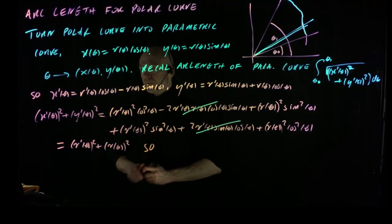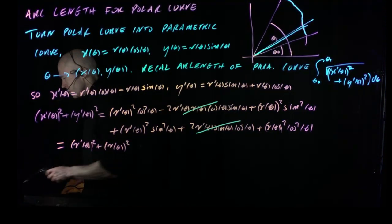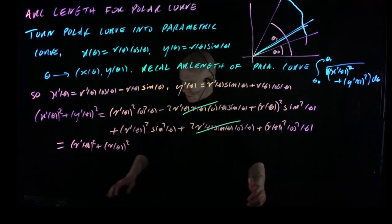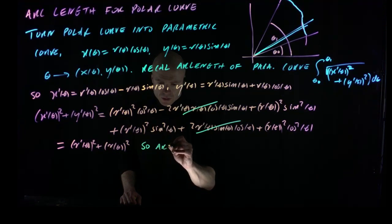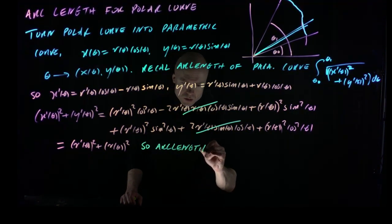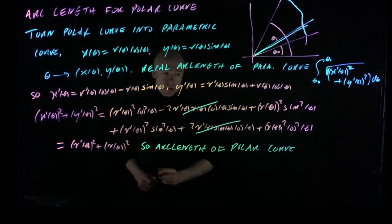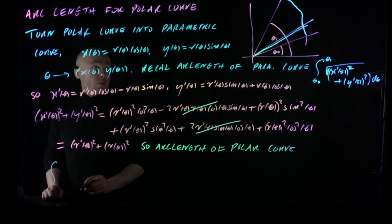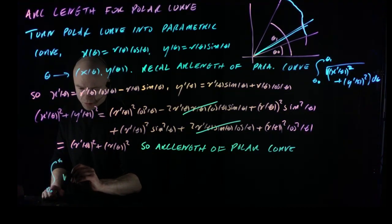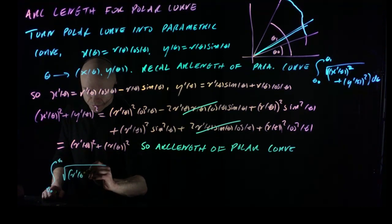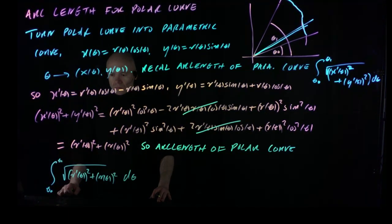So the arc length formula for a polar curve is: ∫[θ₀ to θ₁] √(r′(θ)² + r(θ)²) dθ. Simple and clean.